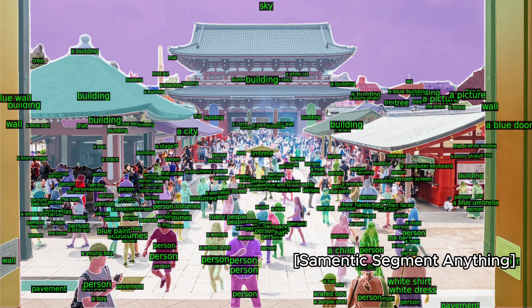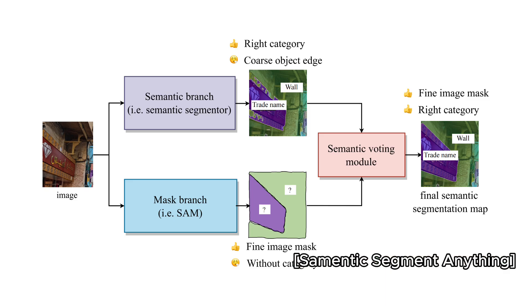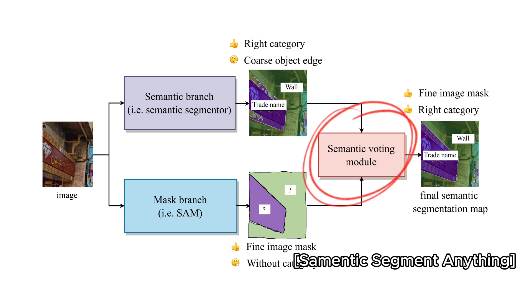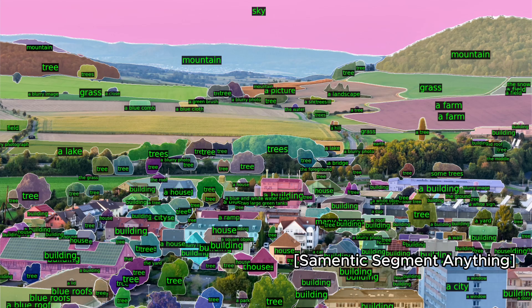How does Semantic SAM achieve this? For every image, it runs algorithms separately for areas and labels, and then combines the results based on the locations of the masks.